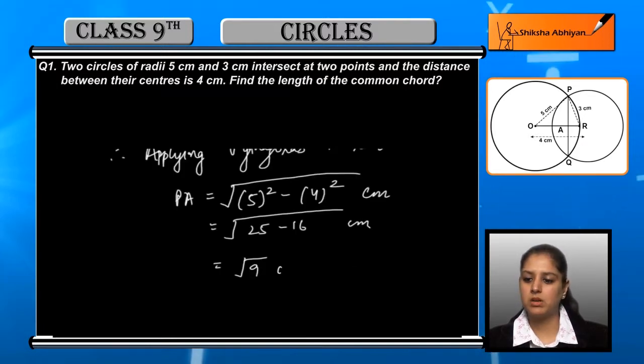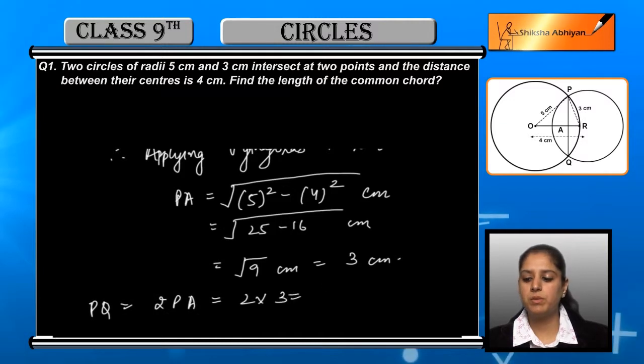So PA's value is 3 centimeters. Finally, we need to find PQ's value, which is twice PA, which equals 2 times 3, which is 6 centimeters.